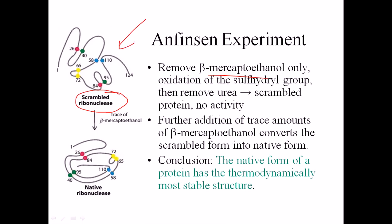What they observed was that the protein formed a scrambled ribonuclease — not the ideal, properly folded structure. This scrambled ribonuclease shows no activity at all. The protein cannot fold correctly because urea is still present, freezing the structure. However, when a trace amount of beta-mercaptoethanol is added back, the scrambled ribonuclease rearranges and finally makes a structure that is fully active, like the original native ribonuclease.